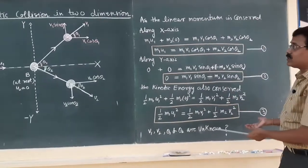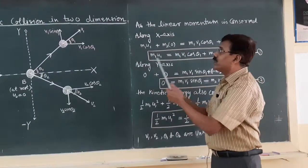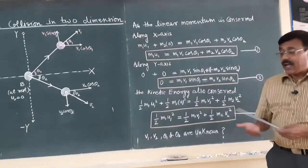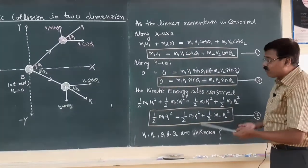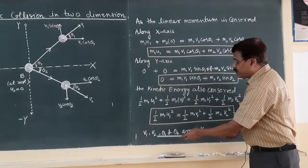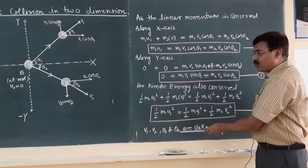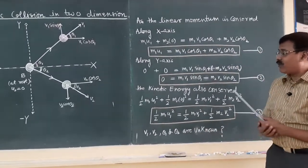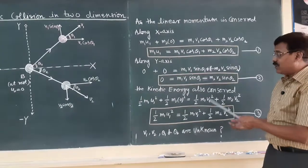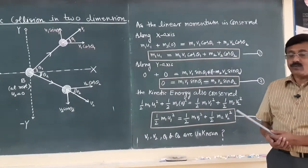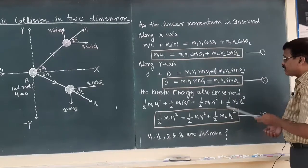These are the 3 equations for elastic collision in 2 dimension and you will find there are 4 unknowns, that is v1, v2, theta 1, theta 2. It means we cannot find the value of all these 4 unknown terms with the help of these 3 equations.